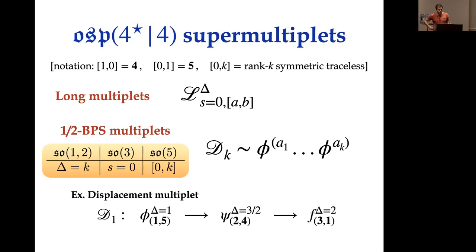The super primaries of these half-BPS multiplets have protected dimension k, zero transverse spin, and are in the symmetric traceless representation of SO(5). There is an infinite family for every integer value of k, but one example is more important than the others: the displacement multiplet. Its super primary has conformal dimension one and consists of five scalars not coupled to the line, then eight fermions of dimension 3/2, and finally an operator of dimension two called the displacement operator, which descends from the stress tensor of the parent theory.